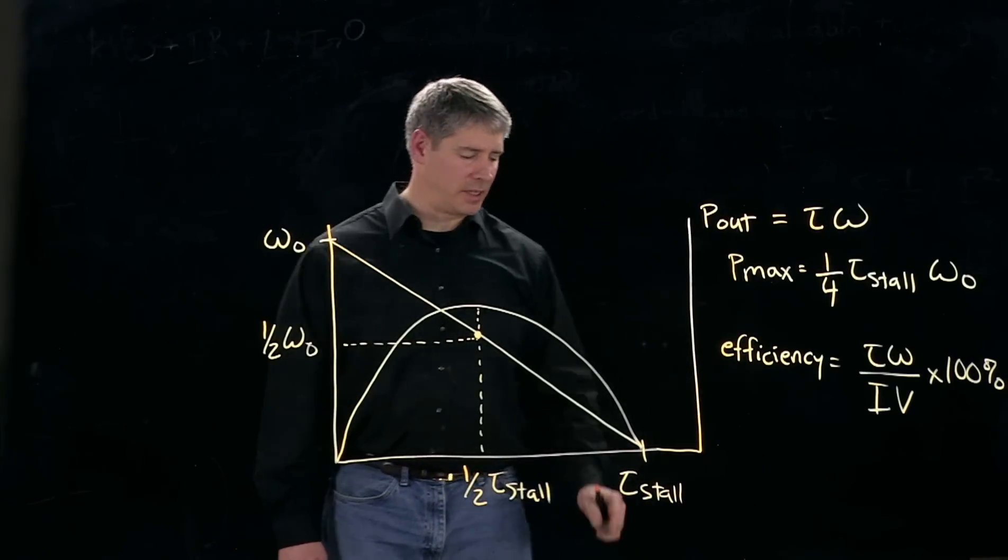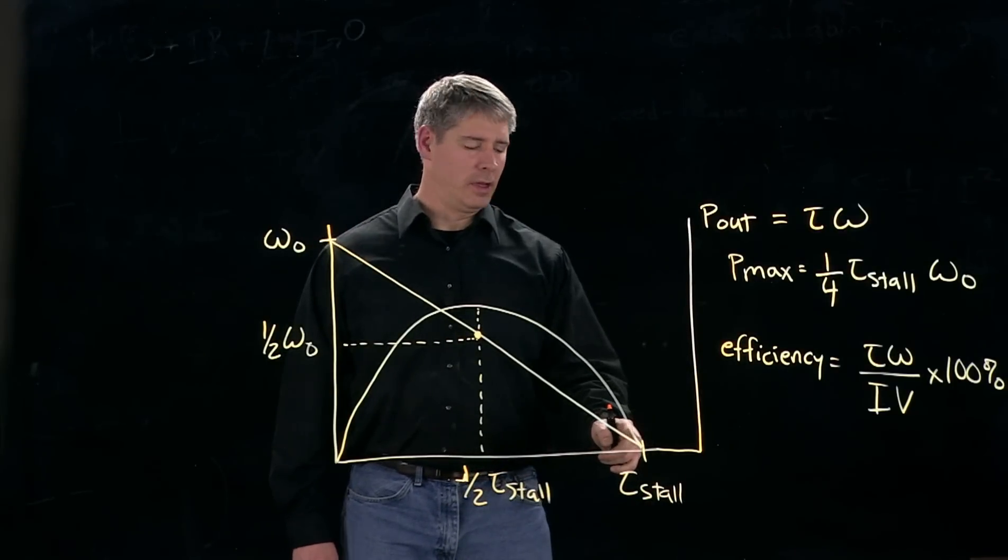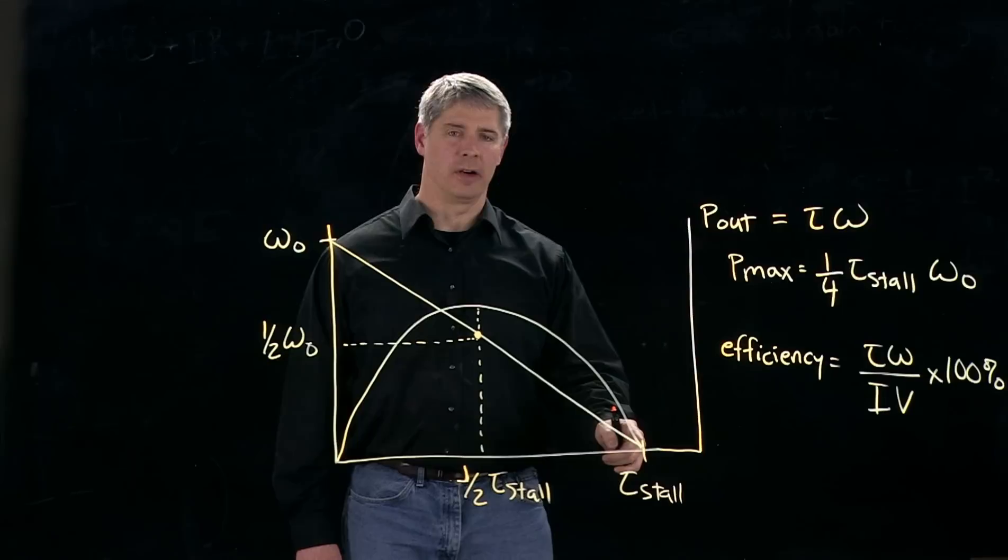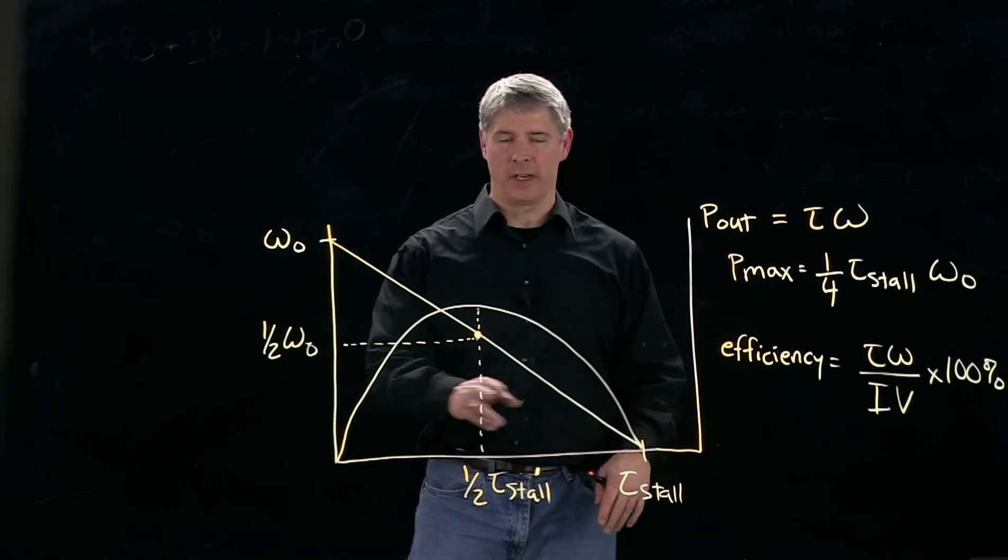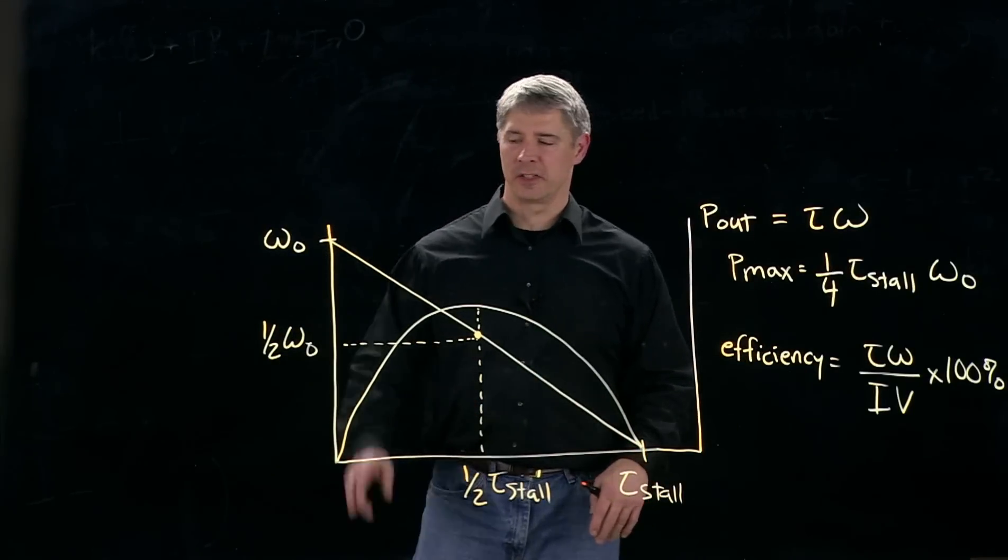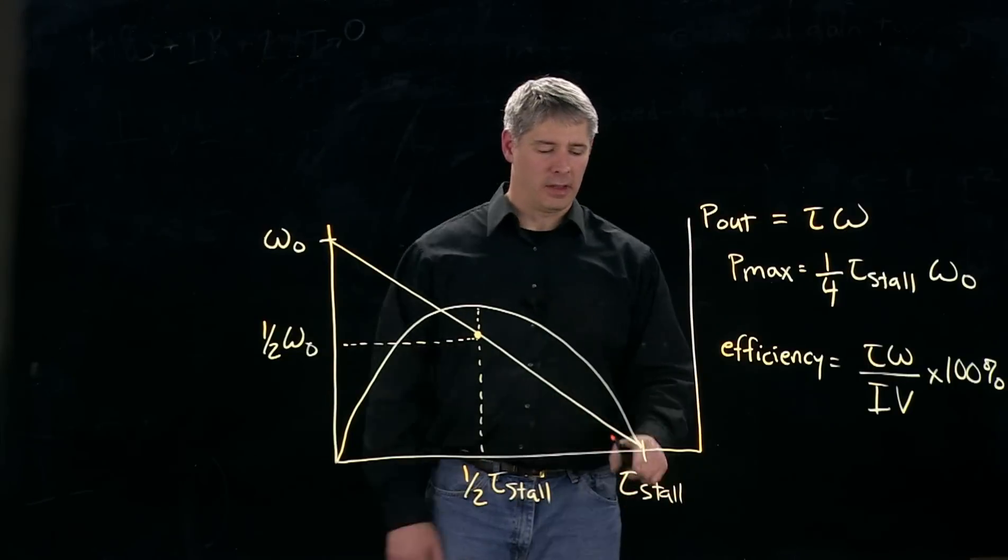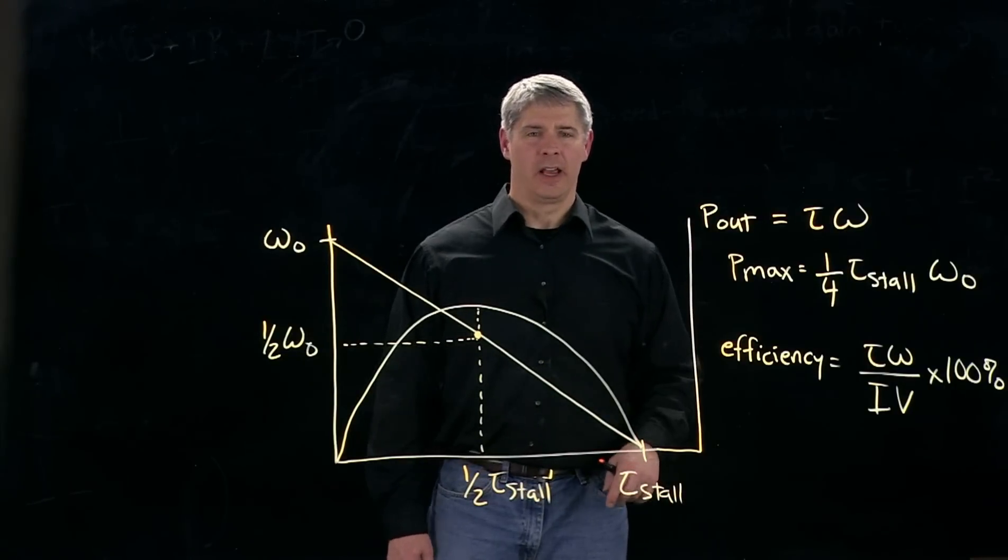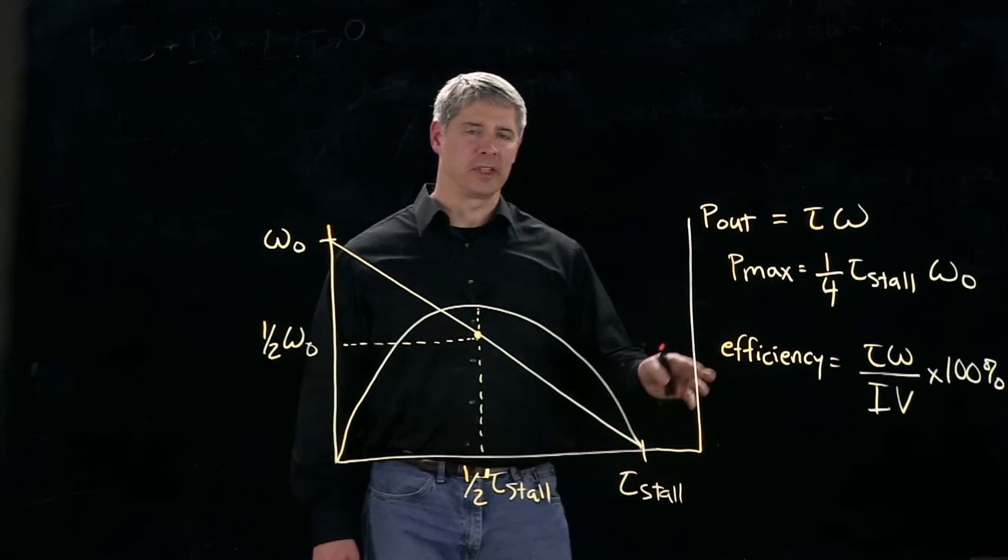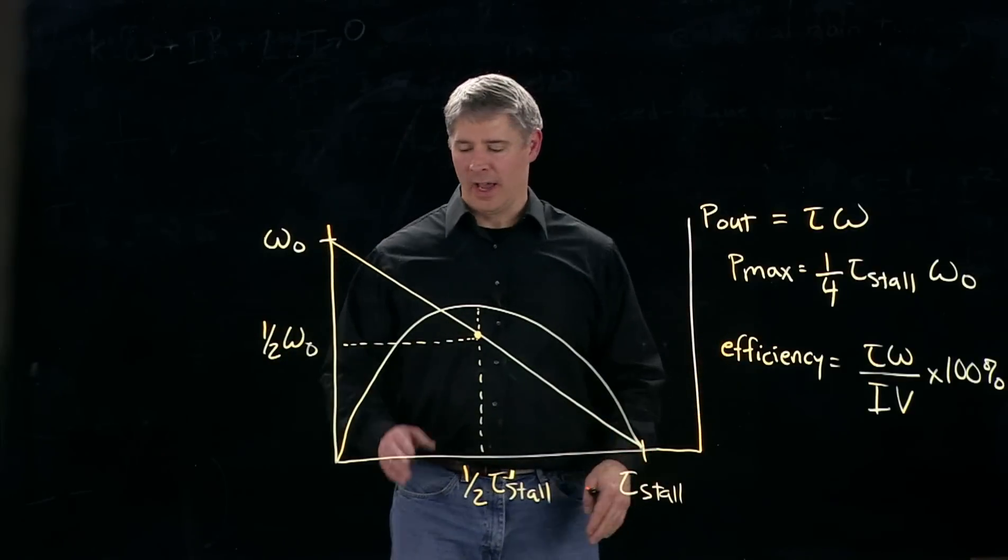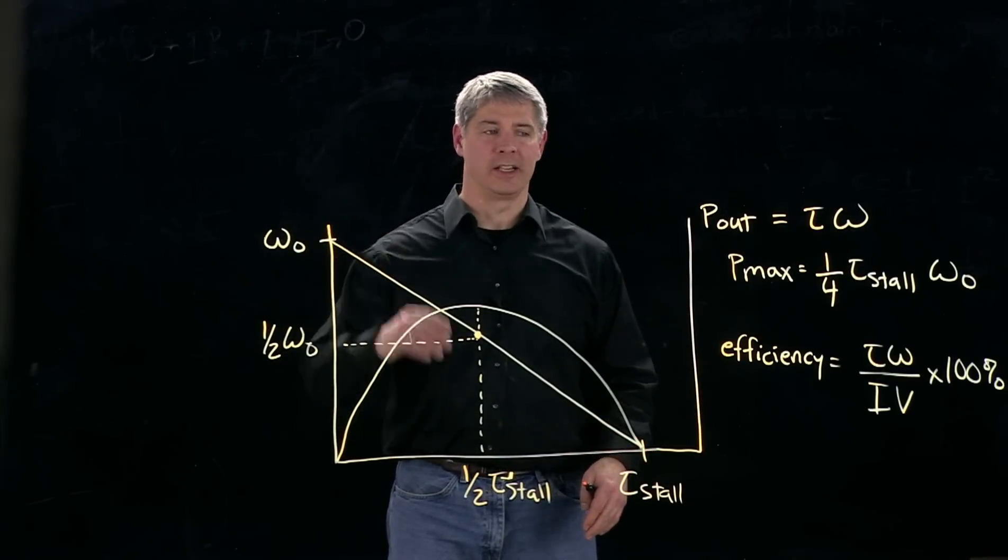So we can see that the efficiency here, for example, is zero because the output power is zero. The efficiency changes a lot depending on where we're operating on the speed torque curve. As we saw, it's zero out here. And it's a little bit complicated. It depends on how much friction there is in the motor. But generally you're going to see higher efficiency of the motor at low torques and high speeds.